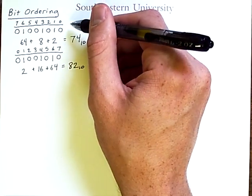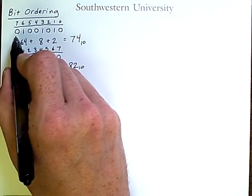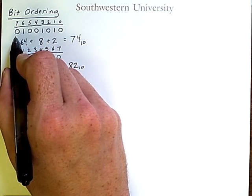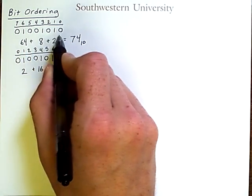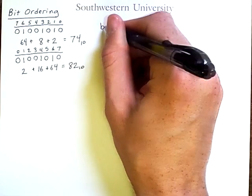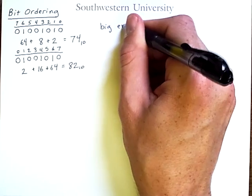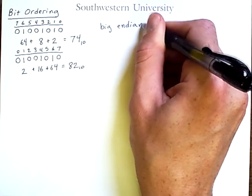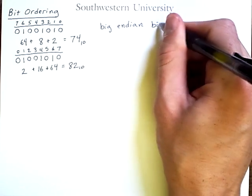This one, which we are used to, in which we start with the most significant bit and then go down to the least significant bit, is known as big endian bit order.